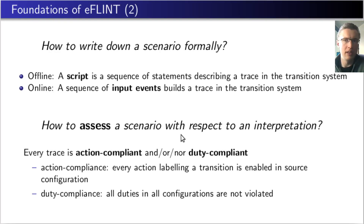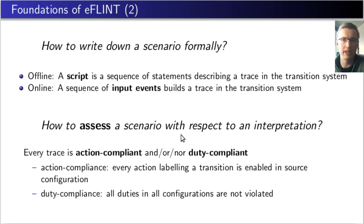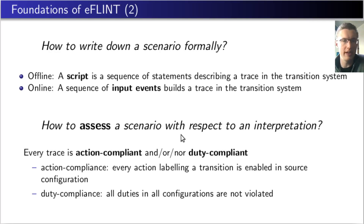Returning to the central questions: how do we write down a scenario in EFLINT? The declarations of a specification induce a transition system. There are two ways to construct a trace within this transition system. In an offline setting, a script is a sequence of statements, some of which trigger actions and events and thereby trigger transitions. In an online setting, input events can trigger actions and events. A trace can be considered action compliant or duty compliant. Action compliant means that every transition is labeled with an action that is enabled in the source configuration of the transition. Duty compliant means that every duty in every configuration of the trace is not violated.